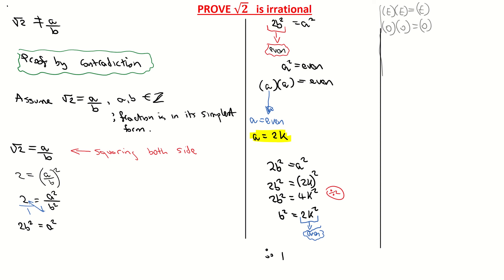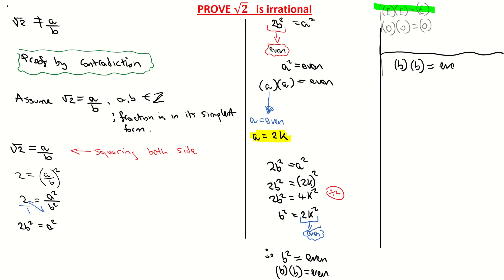Since b² is even, and b² means b times b, the only way to get an even result is if b itself is even. So b is also an even number, meaning b is divisible by 2, and we can write b = 2q for some integer q.